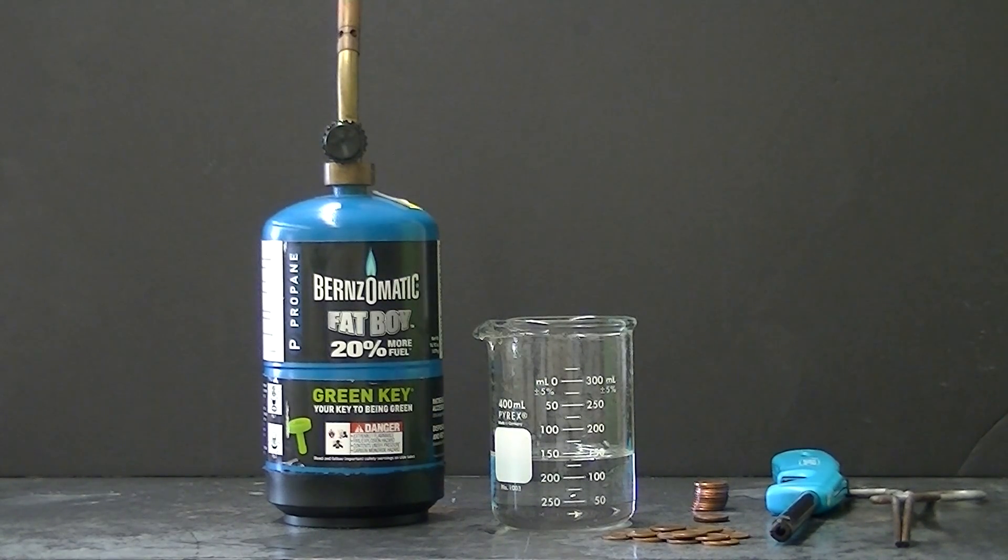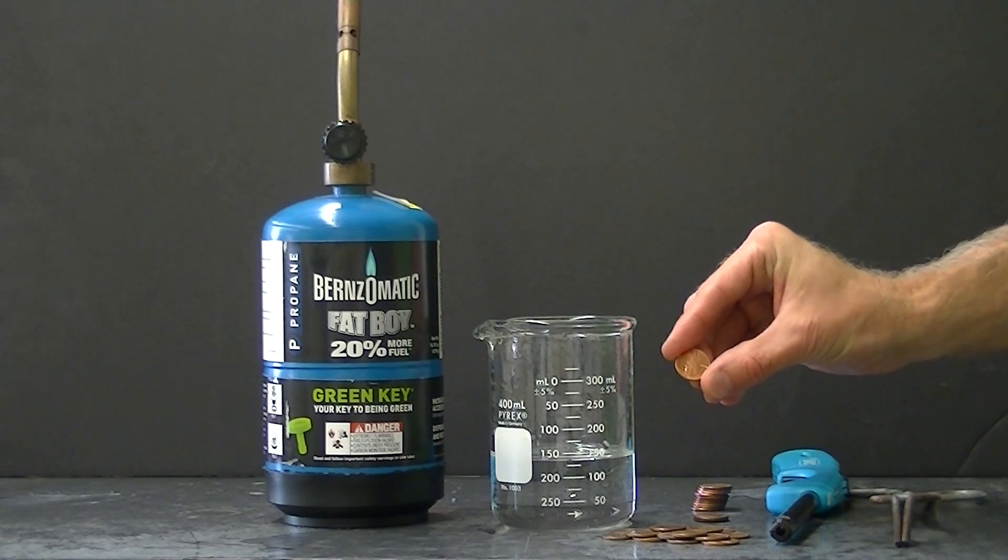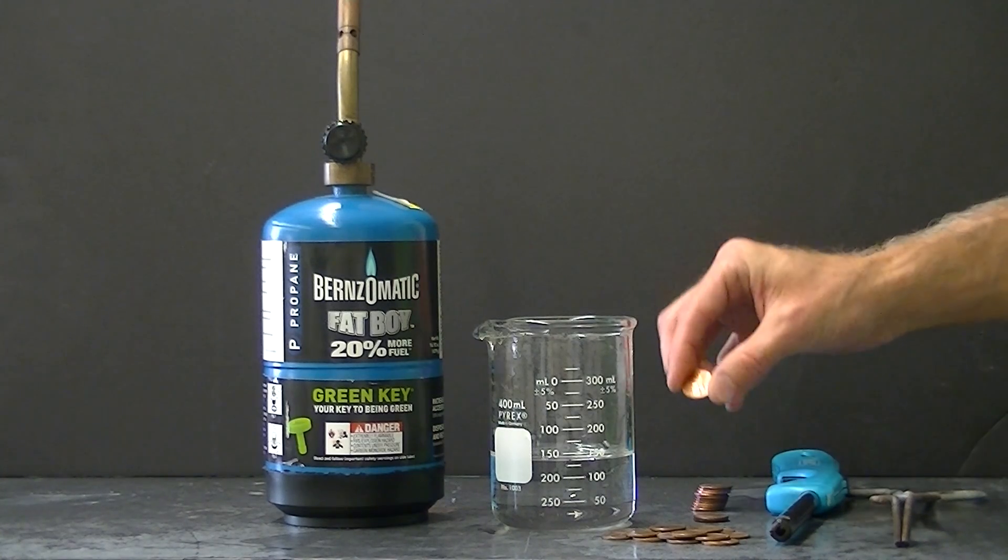I'd like to show you some experiments that you can do with pennies. I have here some new pennies that are minted after 1982. These are comprised of a zinc core and a copper coat.